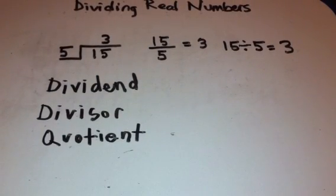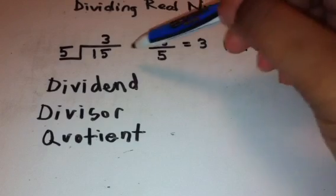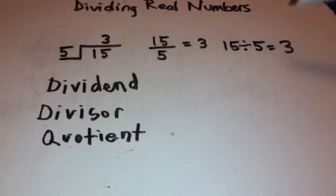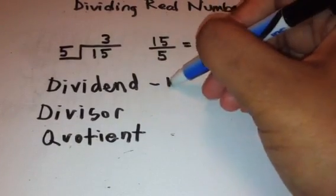So what's our dividend? Well, our dividend is 15 here. It is the number that we are dividing up in the division problem. So our dividend is 15.